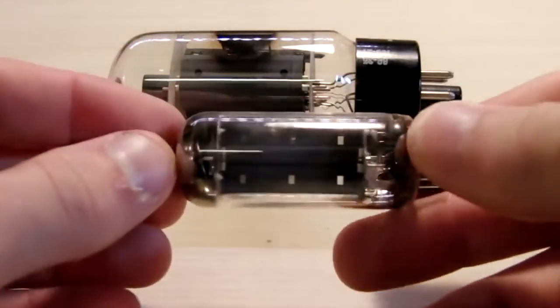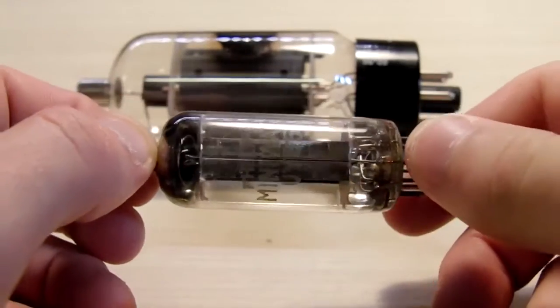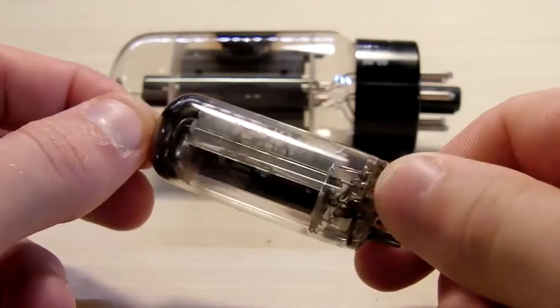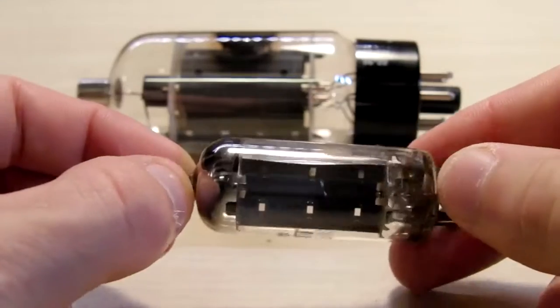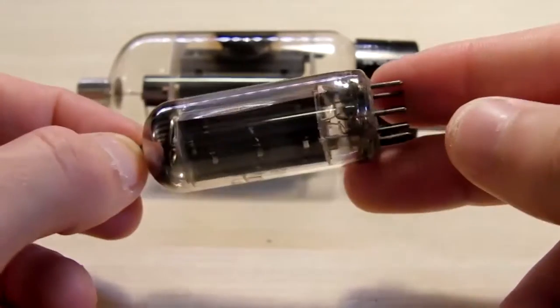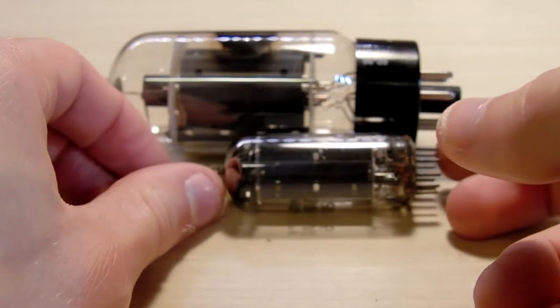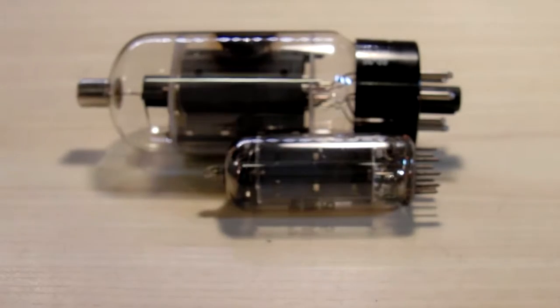It's actually fairly big compared to other standard tubes. Like I mean this is a UI 85 by Philips. It's a rectifier tube. This is a Philips milliwatt vacuum tube here. And as you can see the size comparison is just huge.